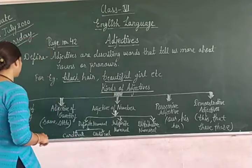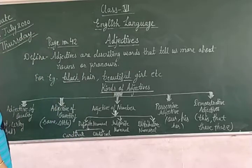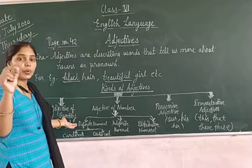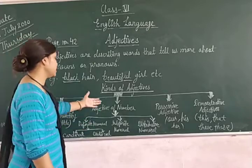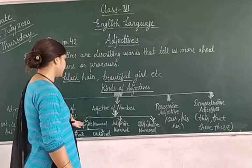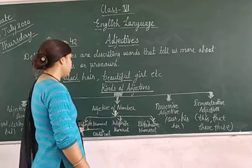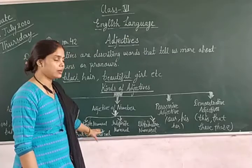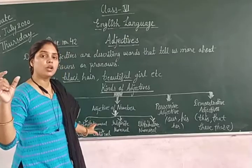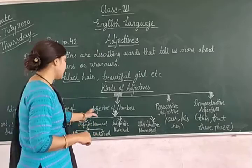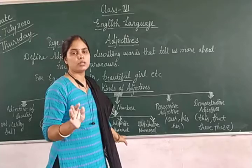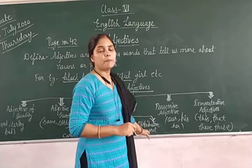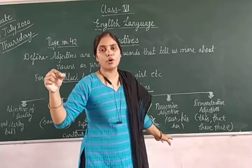Kinds of adjectives: adjective of quality — examples: good, caring, bad. Adjective of quantity — examples: some, little — used with uncountable nouns. Adjective of number has three categories: definite numeral adjective, which has two sub-categories: cardinal and ordinal, and it shows the exact number. Indefinite numeral does not tell the exact number.